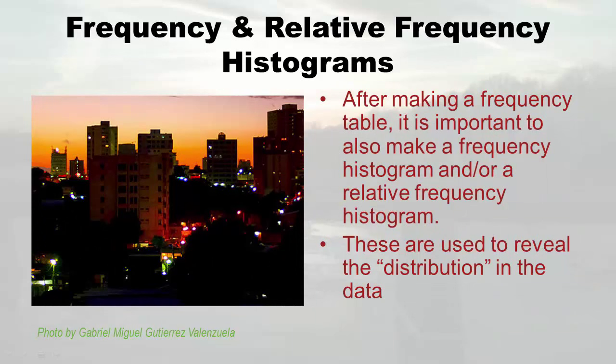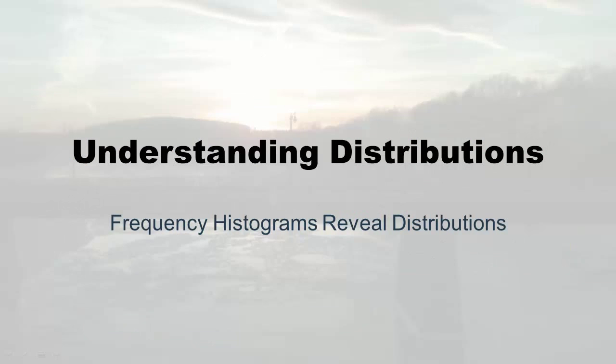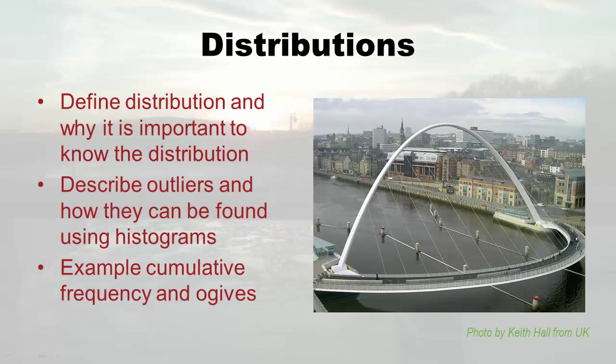Skylines look like histograms to me. After making a frequency table with quantitative data, it's important to make a frequency histogram or relative frequency histogram, because it reveals the distribution. We'll also talk about distributions, then describe what an outlier is and how to detect them using histograms, and finally I'll explain what cumulative frequency and an ogive are.